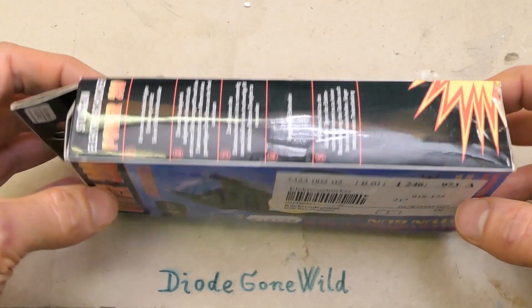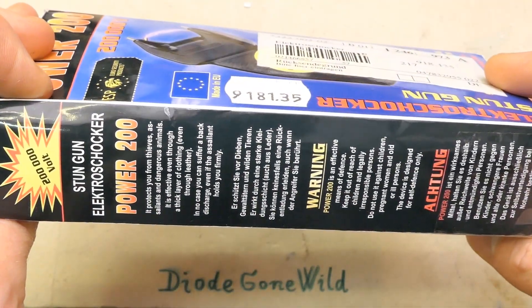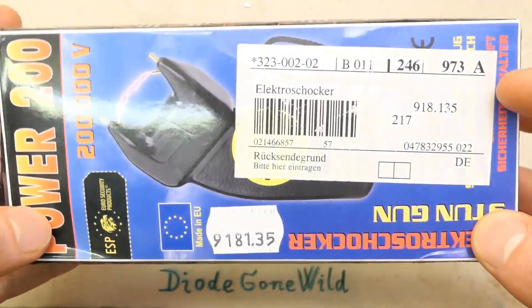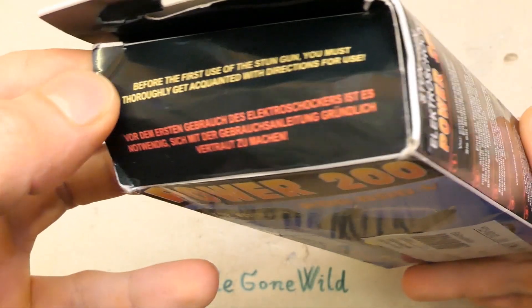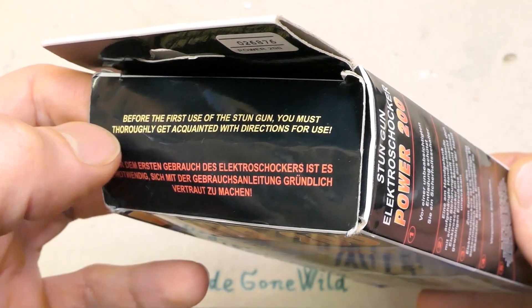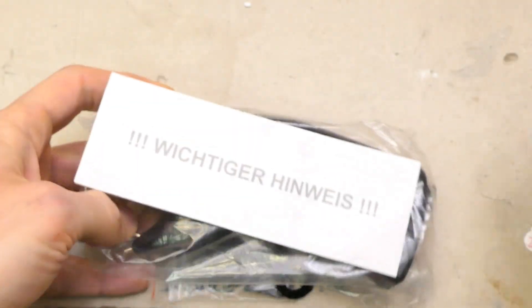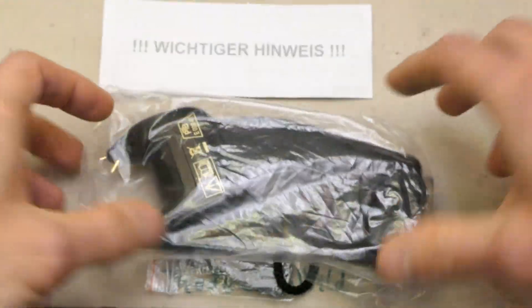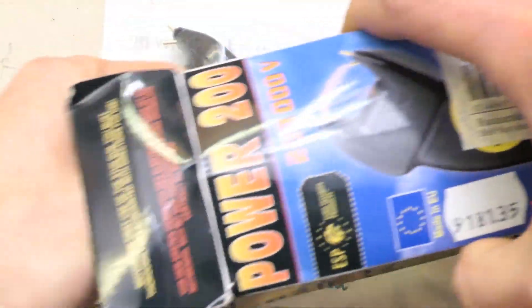It seems to come from Germany - the text on the box is in German and English. That's the box. Now let's try to open it and test it and see what's inside. Before I use it, I have to thoroughly get acquainted with directions for use. Now let's open it.